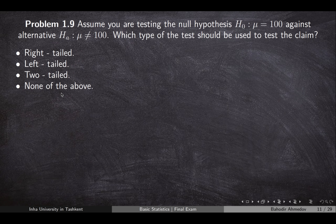Problem number nine: assume we would like to test the null hypothesis mu equals 100 against the alternative hypothesis mu is not equal to 100. Which kind of test do we use? When choosing the test type, we look at the sign in the alternative hypothesis. If it has a greater-than sign, we use the right-tail test. If it has a less-than sign, we use the left-tail test. If it has a not-equal sign, we use the two-tail test.